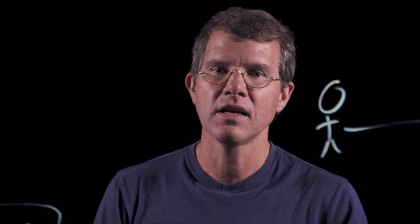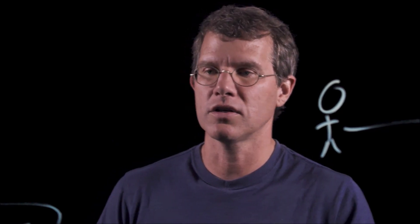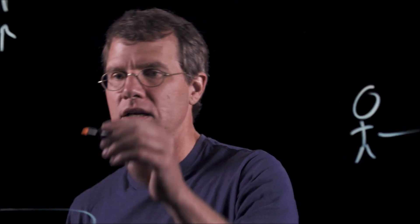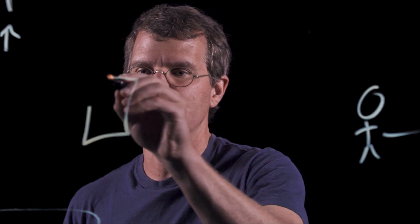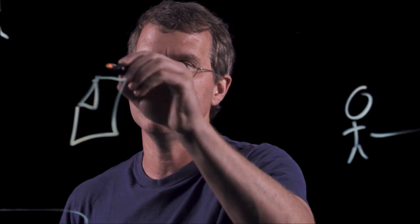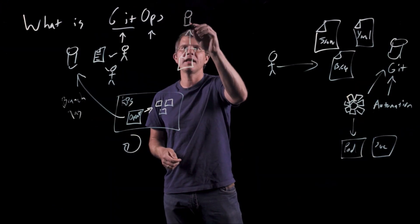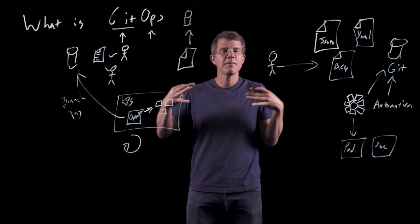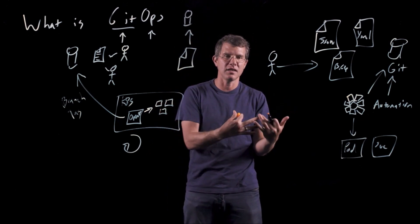And the really fantastic thing about this is that the only thing that you did in order to take that action is you went and you wrote a new version of the text file and you pushed it into the repo. And that's very familiar if you're used to doing that for code. And then the amazing thing about that is because it's in a Git repo, you get to take advantage of things like rollback.